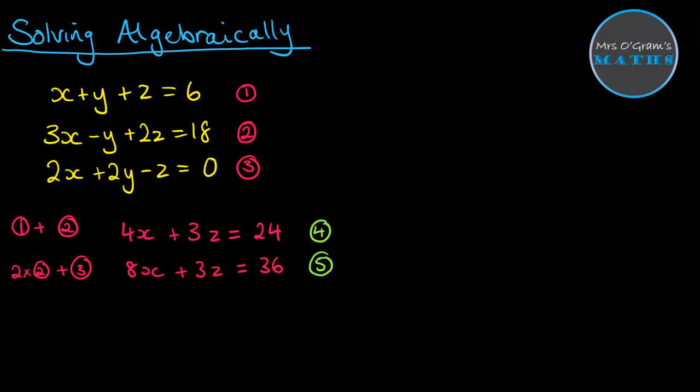So now I've got two equations with two unknowns in the x's and the z's. I've got the, helpfully, the three z is also the same magnitude in both of those equations. So I don't need to do any multiplying up. What I can do straight away is do one subtract the other. And I'm going to do the bigger one of the other things, take away the smaller one. So I'm going to do five, take away number four. So if I do this eight x that we've got here minus the four x, we will get the x's will be four x, the three z minus three z gets to nothing. And then the 36 minus 24 is 12. So therefore x is three.